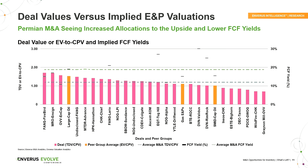This graph is showing the total deal value or enterprise value divided by the CPV, which is our estimate of PDP value on these deals — with a number greater than one meaning that you paid for upside, and less than one meaning that it was PDP or PDP exceeded deal value.